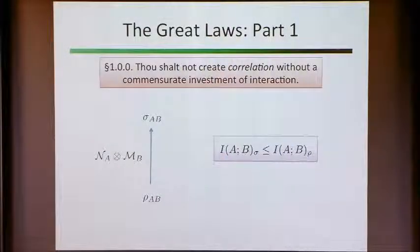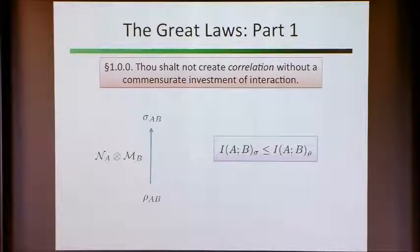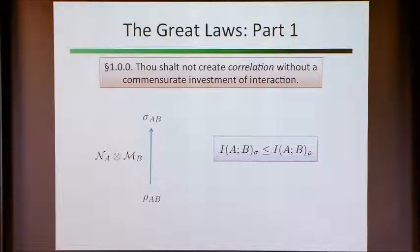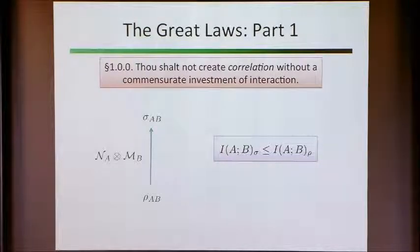The first great law: if you have some density operator ρ_AB for a composite quantum system on parts A and B, and you have a noisy operation that acts in a product fashion on the A and B parts — the quantum mechanical analog of a stochastic map is a completely positive trace-preserving map — you have a data processing inequality. The mutual information, defined as the entropy of ρ restricted to A plus the entropy of ρ restricted to B minus the joint entropy of ρ_AB, cannot increase under these product operations. You can't create correlation from nothing.